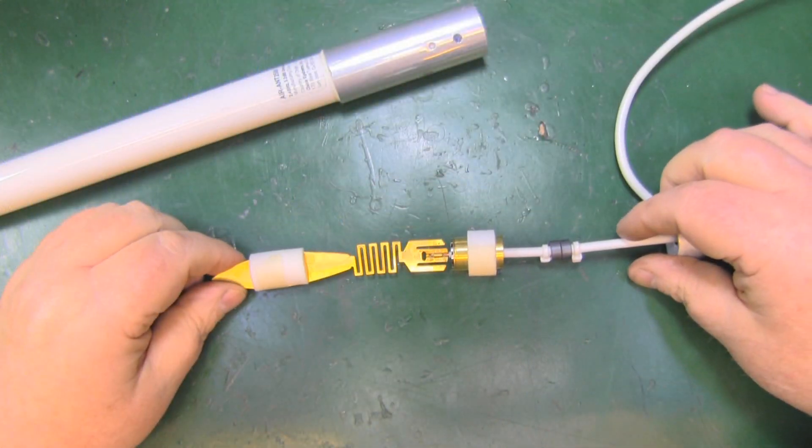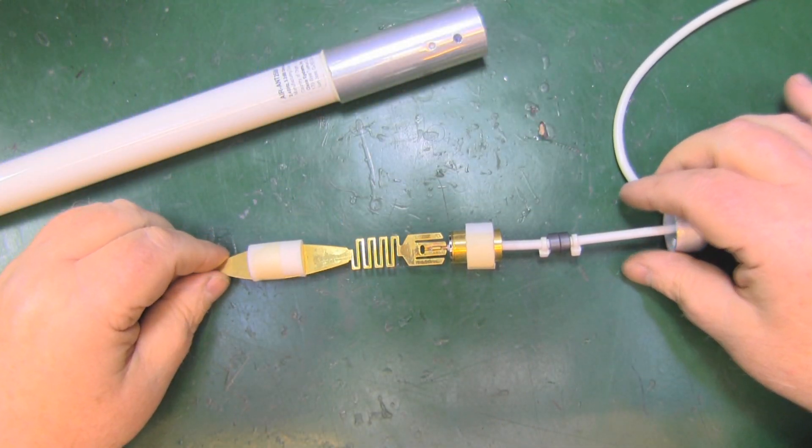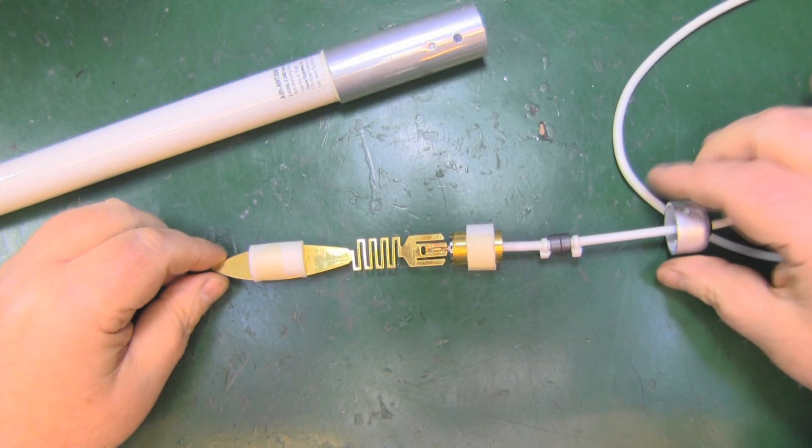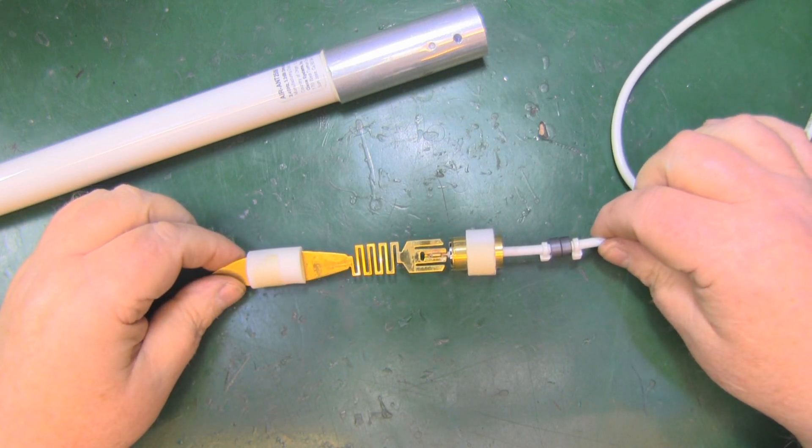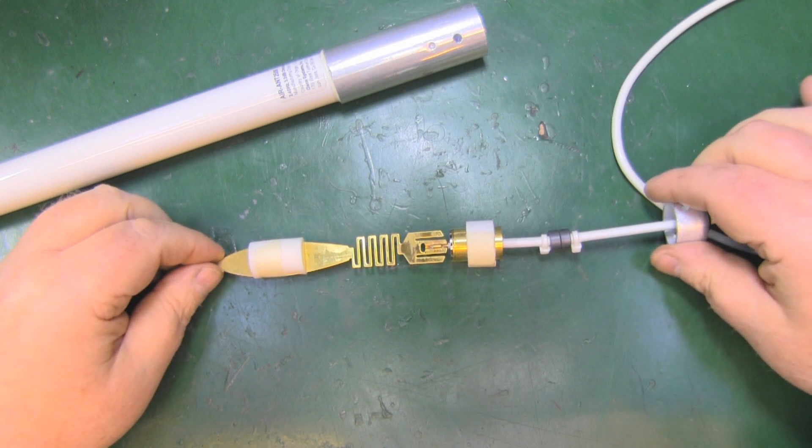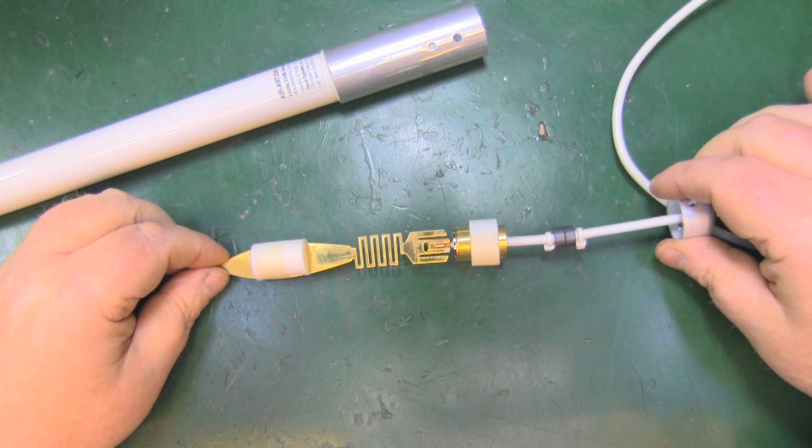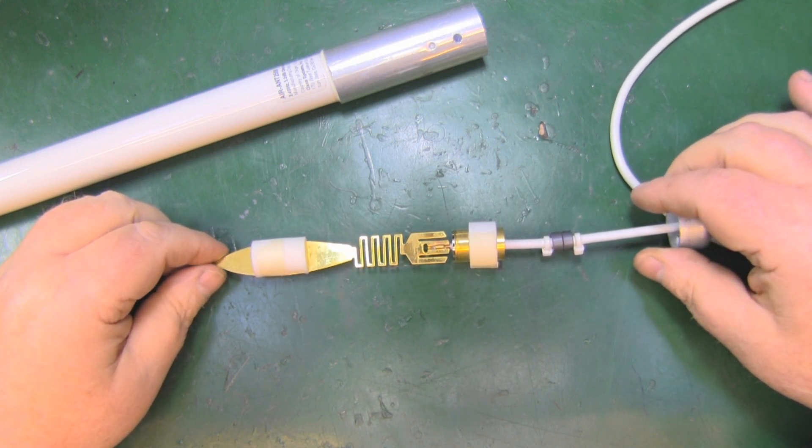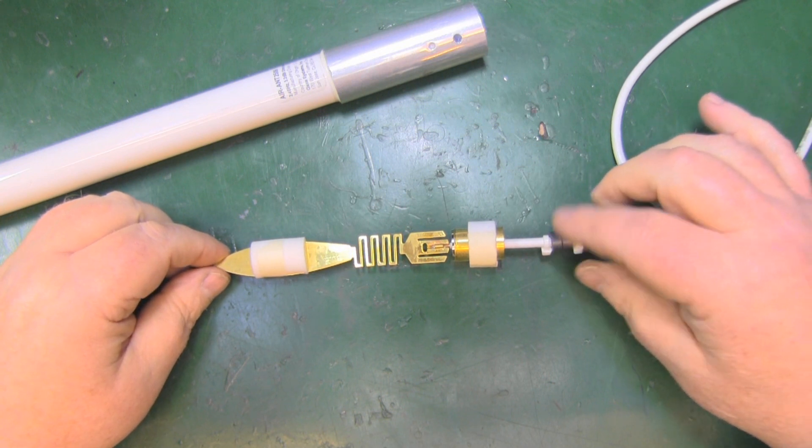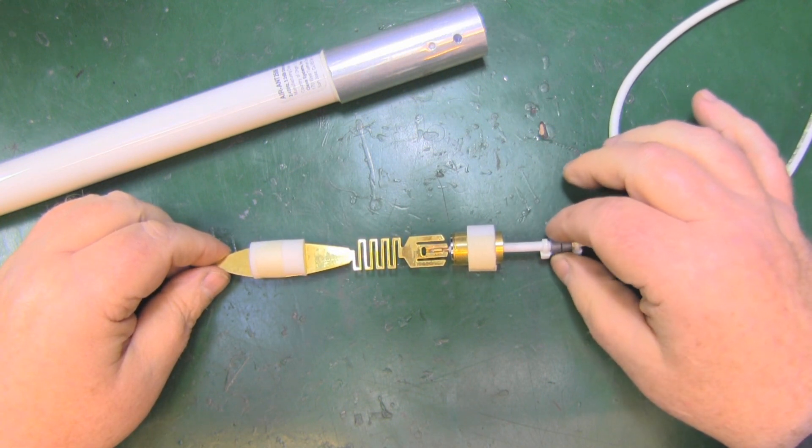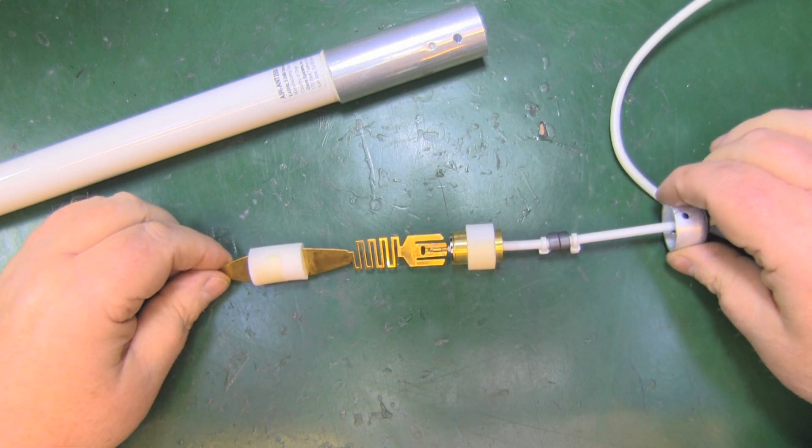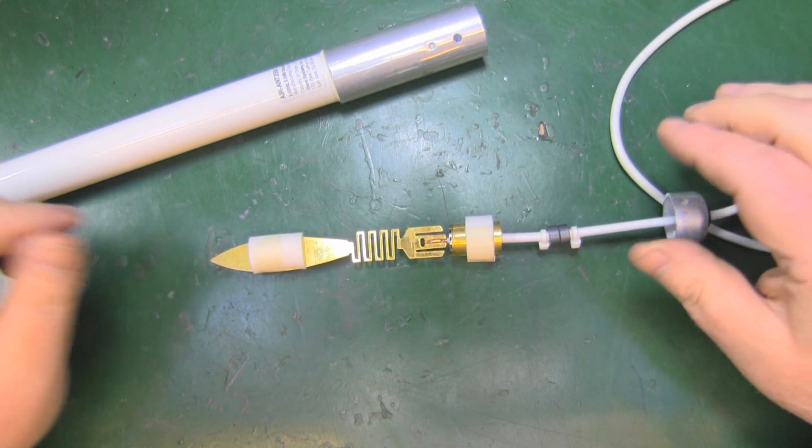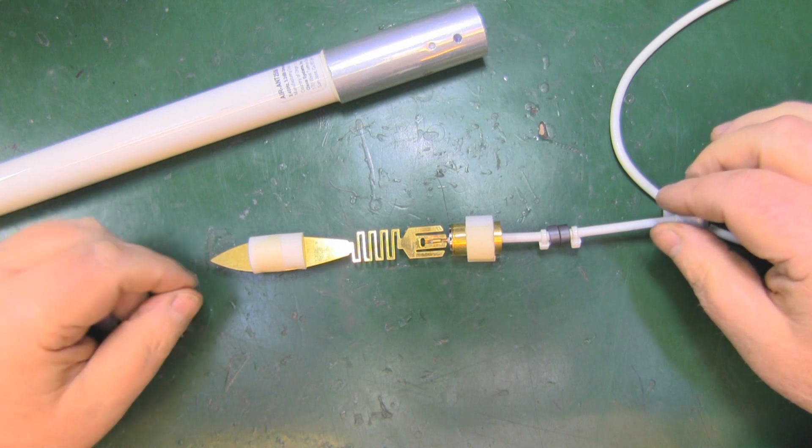Now as you can see here on the bench, I've got the inside of this. We managed to get the element out, and I'm a little bit disappointed—it's exactly the same element as Cisco have in their ceiling antenna. Yeah, it's exactly the same. They're just marketing this one a little bit differently.